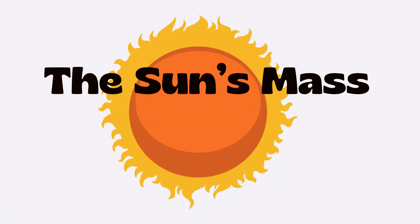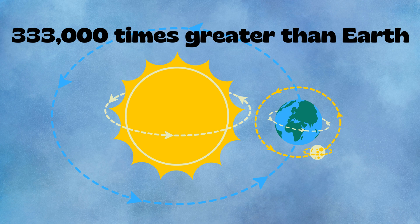The sun's mass. The sun is also very heavy. Its weight, or mass, is about 333,000 times greater than Earth's mass. You can think of the sun as a huge giant compared to our tiny Earth.